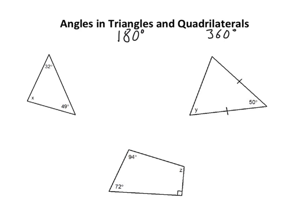So if I've got these three angles here - 32, 49, and X - I know that 32 plus 49 plus whatever X is, is going to make 180.